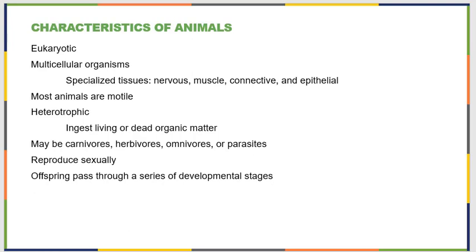When we talk about animals, we're talking about organisms that are eukaryotic, multicellular, they tend to be motile — they have the ability to move around — and they're heterotrophic, so they ingest living or dead organic matter in order to get their carbon to survive. They may be meat eaters, plant eaters, both, or they may be parasitic.